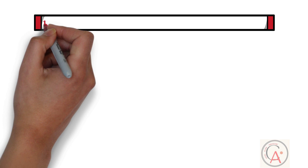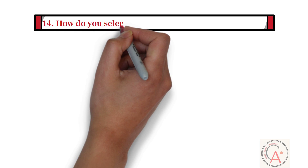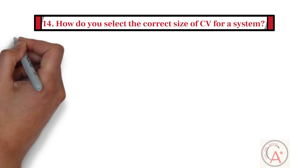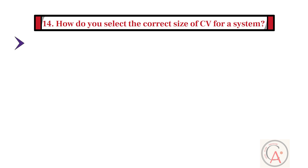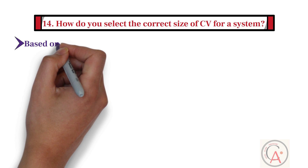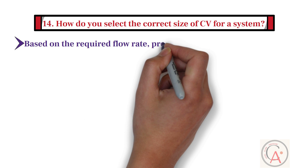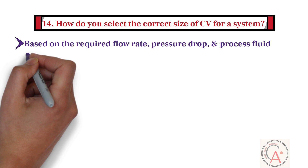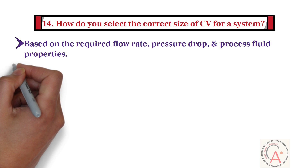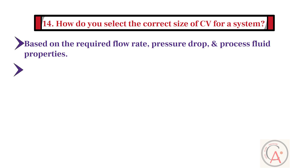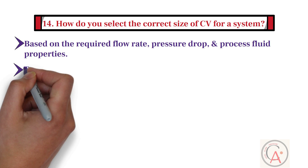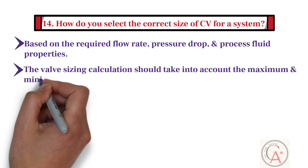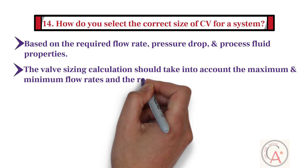Fourteenth question: how do you select the correct size of control valve for a system? The correct size of control valve is selected based on the required flow rate, pressure drop, and process fluid properties. The valve sizing calculation should also take into account the maximum and minimum flow rates and the rangeability required.